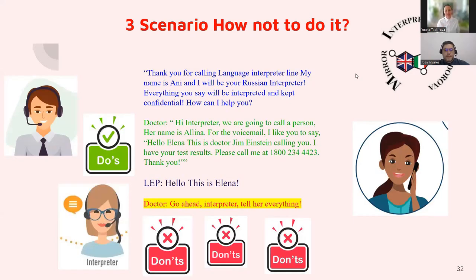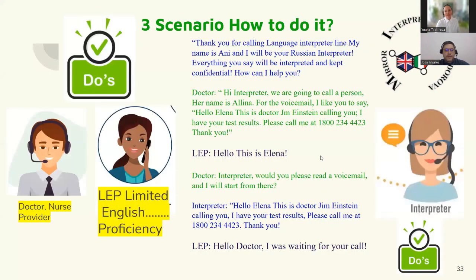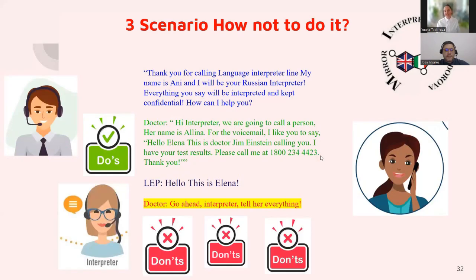[Wrong scenario 3] Interpreter: 'Thank you for calling the language interpreter line. My name is Ani. I will be a Russian interpreter. Everything you say will be kept confidential.' Doctor: 'Hi, interpreter. We're going to call Elena. For the voicemail, I'd like you to say: Hello, Elena. This is Dr. Jim Einstein calling you. I have your test results. Please call me at 1-800-234-4423. Thank you.' Elena answers. Interpreter: 'Hello, doctor. We have Elena on the line.' Doctor: 'Go ahead, interpreter. Tell her everything.' The problem is: the moment a limited speaker is on the line, the doctor should not address the interpreter any further. How to do this correctly is shown on the next slide.